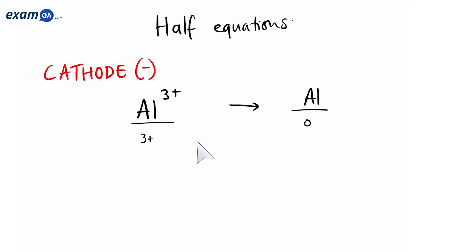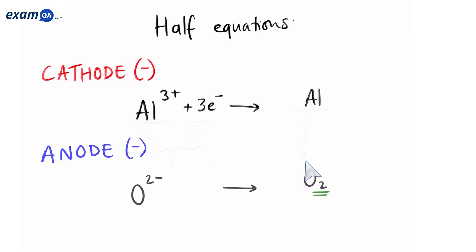In this case, three plus is higher than zero. So to fix this, we're going to add three electrons to the left. That gives it a three minus charge. So now both sides have the same charge. Let's have a look at what happens at the anode. We start off with oxygen two minus ions and this turns back into O2.